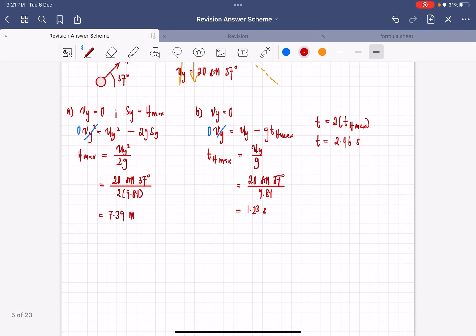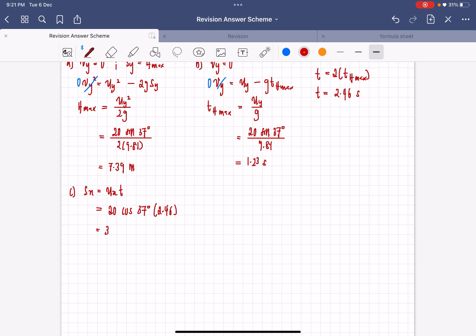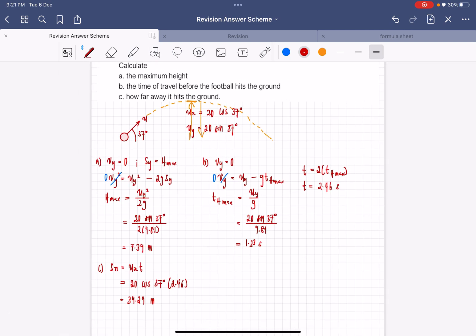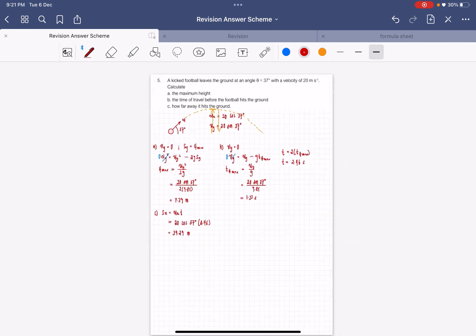Next, question C is how far away it hits the ground. That is Sx equals Ux times t. Ux is 20 cos 37 degrees times 2.46. 20 cos 37 times 2.46 equals 39.29 meters. So that is your range, how far away it hits the ground.